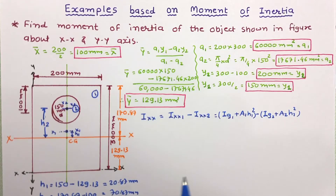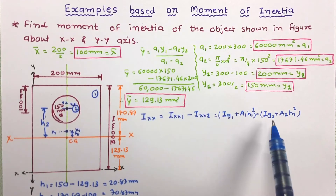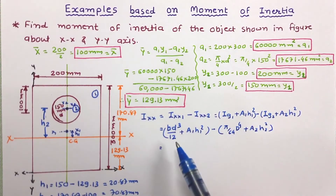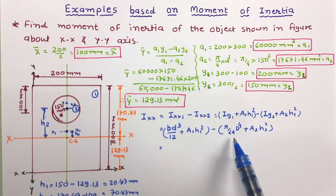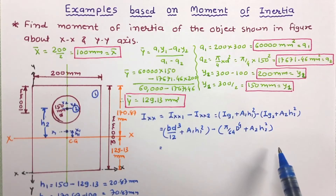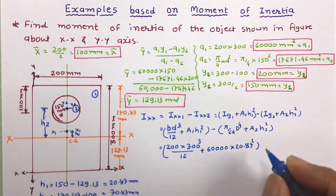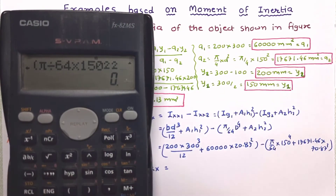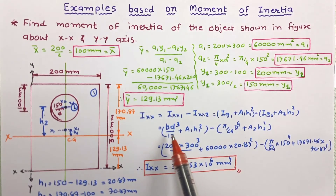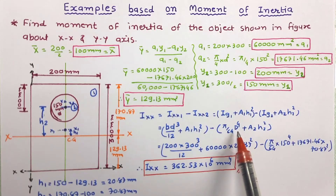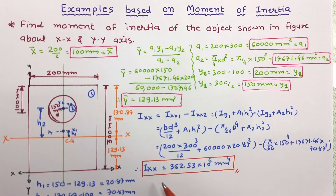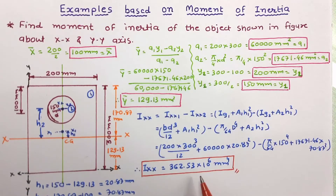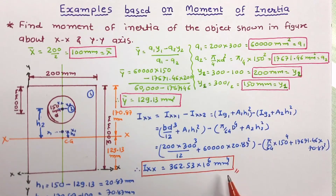Now let us write the expressions for Ig1 and Ig2. The moment of inertia about the centroidal axis for a rectangle is bd³ divided by 12, and for a circle it is pi by 64 times d to the power 4. Equating all values of b, d, diameter, area, h1, and h2, the moment of inertia about the xx axis is obtained as 362.53 × 10⁶ mm⁴. Now let us work out Iyy.